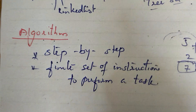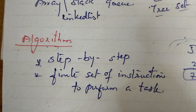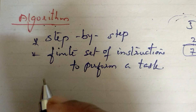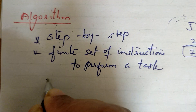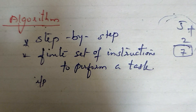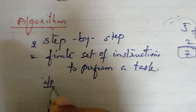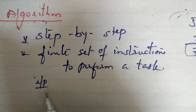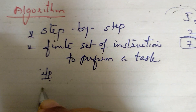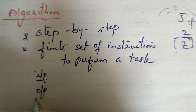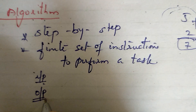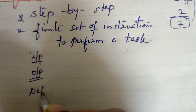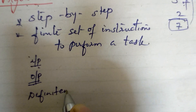An algorithm must satisfy certain conditions and criteria. The first property is input — input is externally supplied by the user. The second property is output — the result produced is the output.